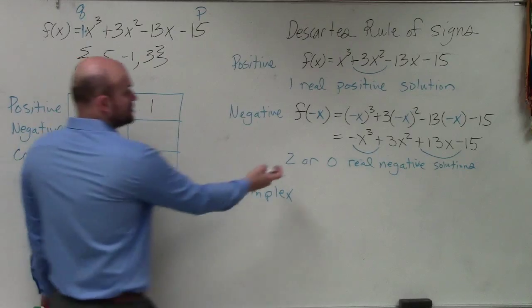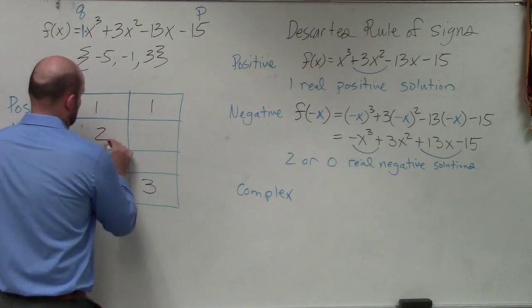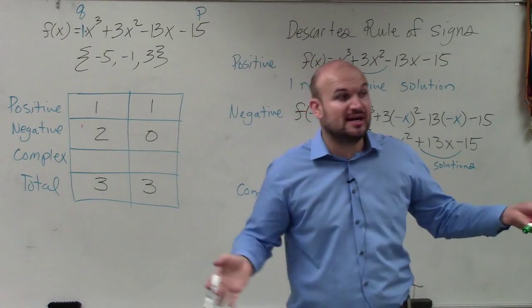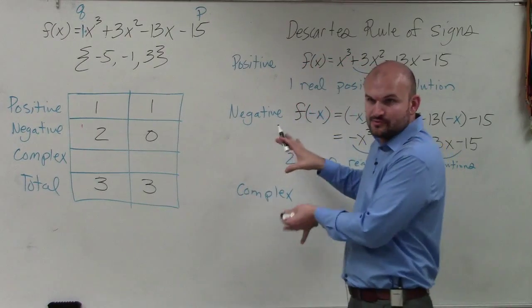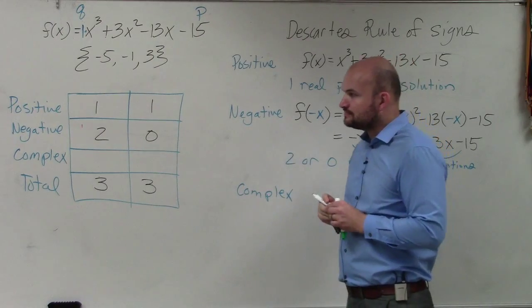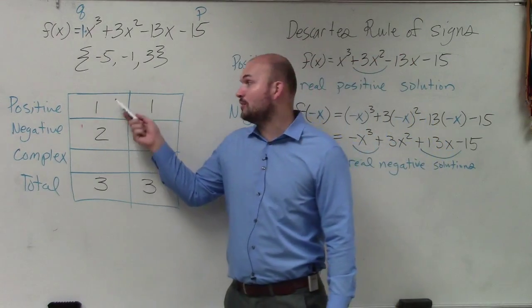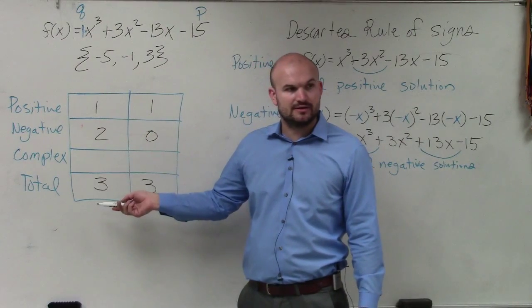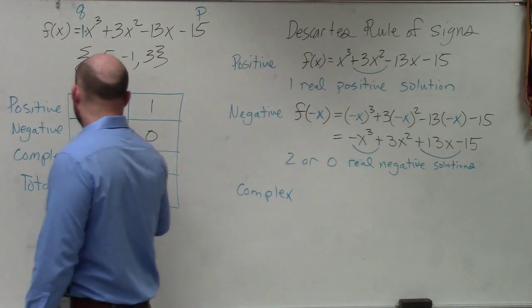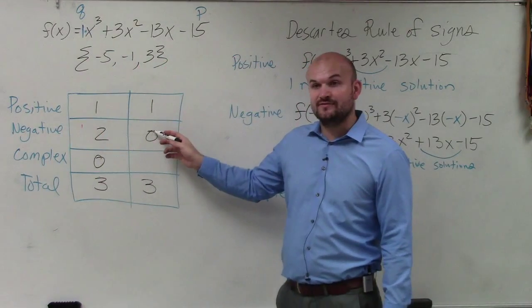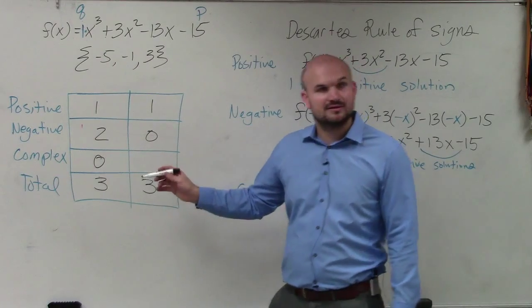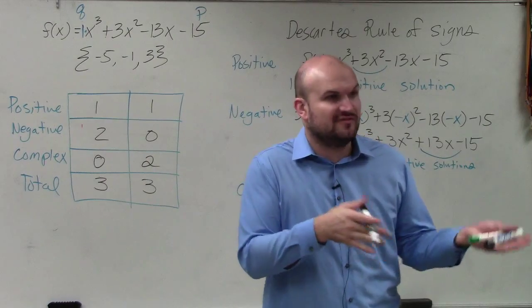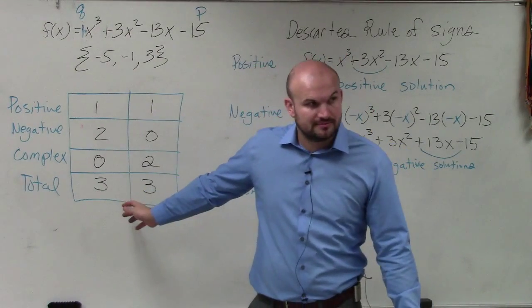Negative real zeros, there's either 2 or 0. Now, again, guys, I'm kind of cheating because I already know what the answer is. But the next problem you guys are going to do, you're not going to know what the answer is. So that's why this is really important to follow this process. So if let's say I have one positive, two negative, how many complex do I need for a total of 3? Zero. If I only had one positive and zero negative, how many complex? Two. So do you guys see how the number of real positive and negative plus the number of complex always gives you 3?